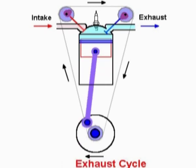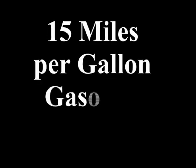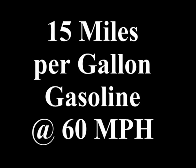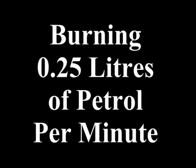The calculation's done. There's a 15 miles per gallon petrol engine running at 60 miles an hour means that it is burning approximately 0.25 of a liter of petrol.